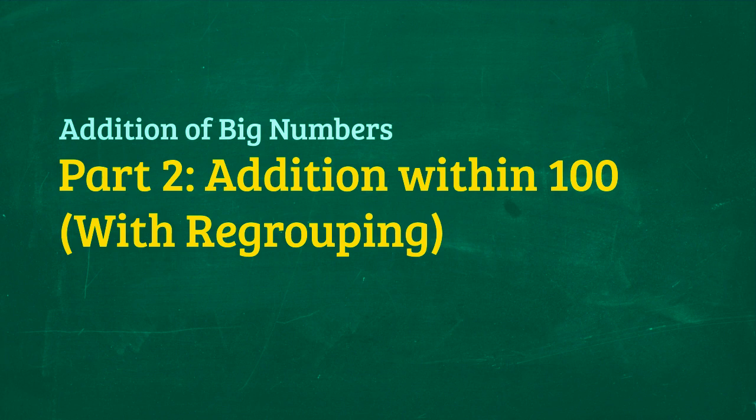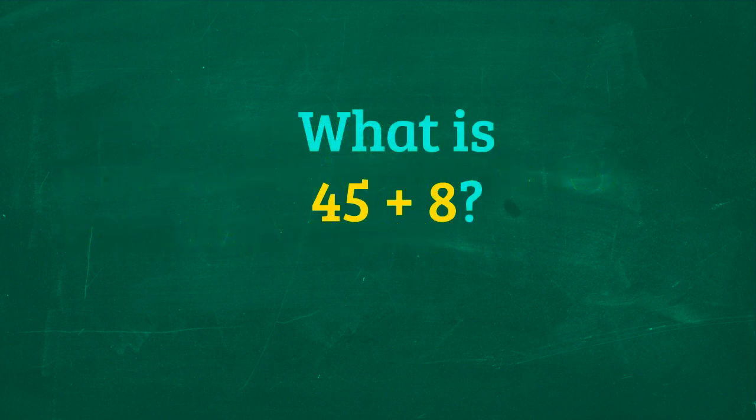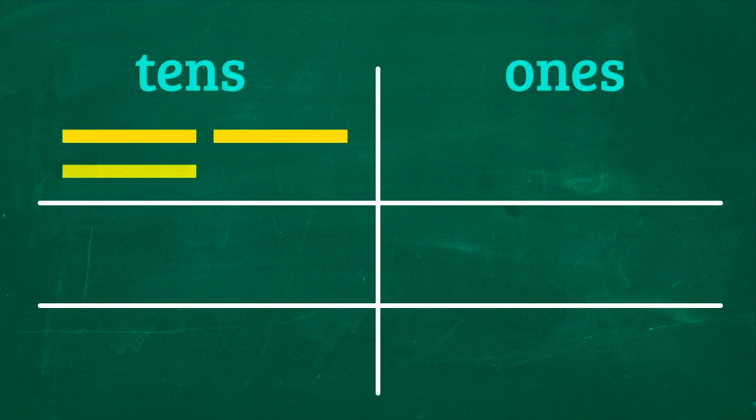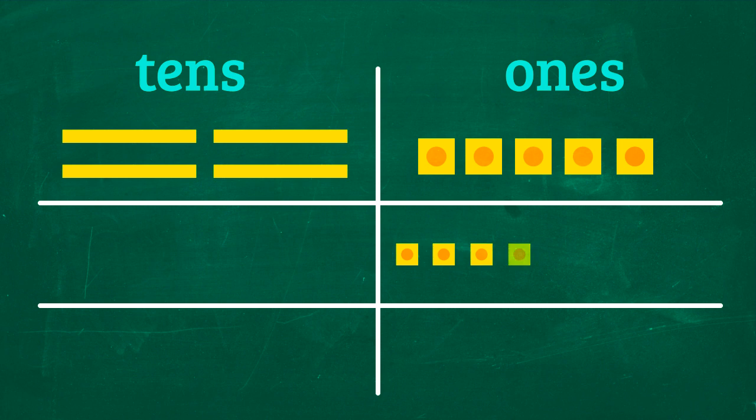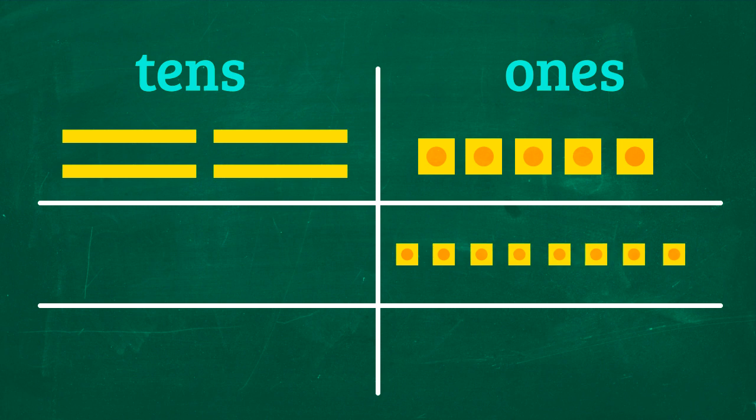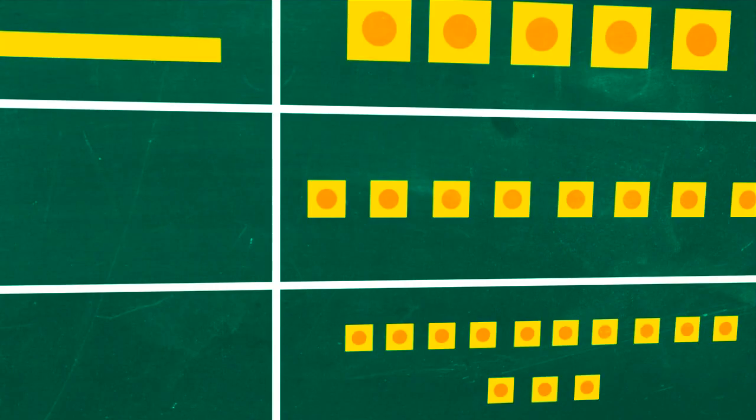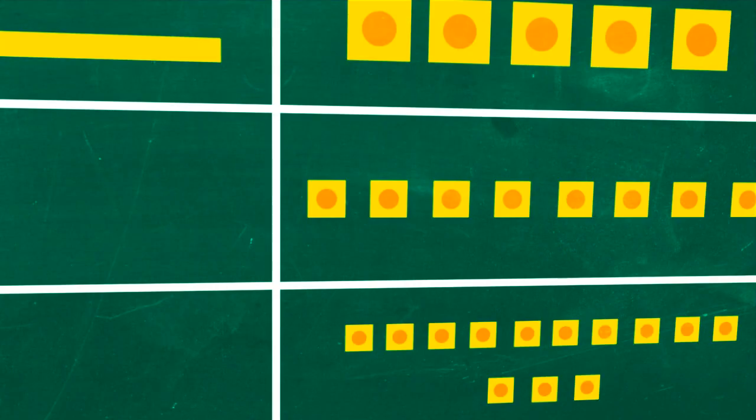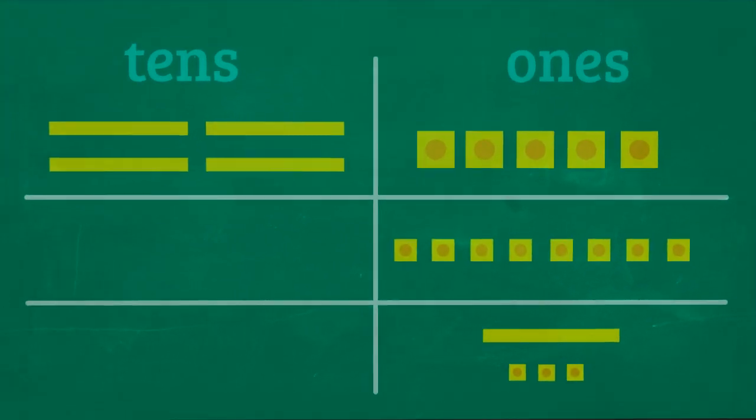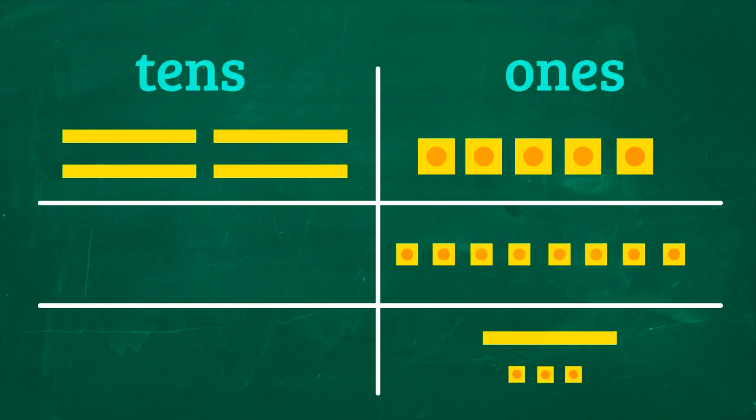Let's add 45 and 8 using base 10 models. 45 is 4 tenths and 5 ones, while 8 is 8 ones. Put together the ones and we have 13 ones. What we need to do is regroup the 13 ones into one 10 and three ones. This is called regrouping.